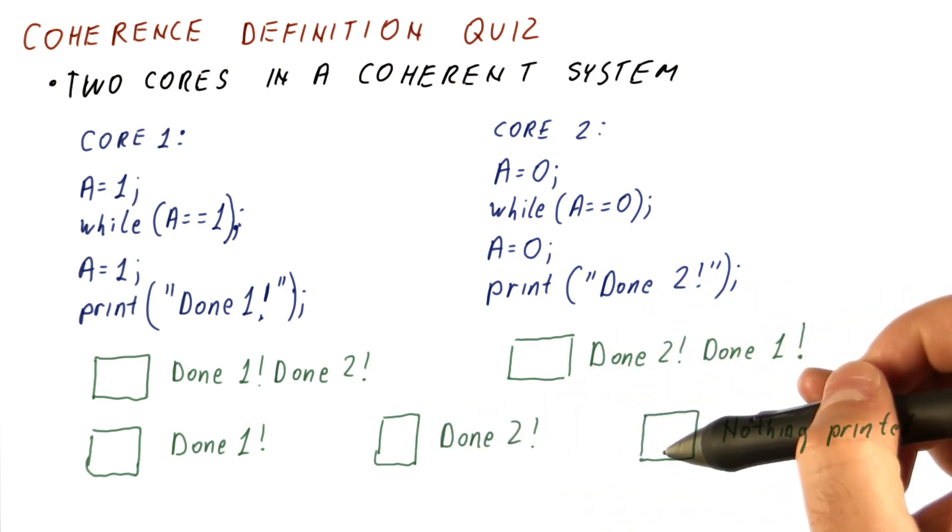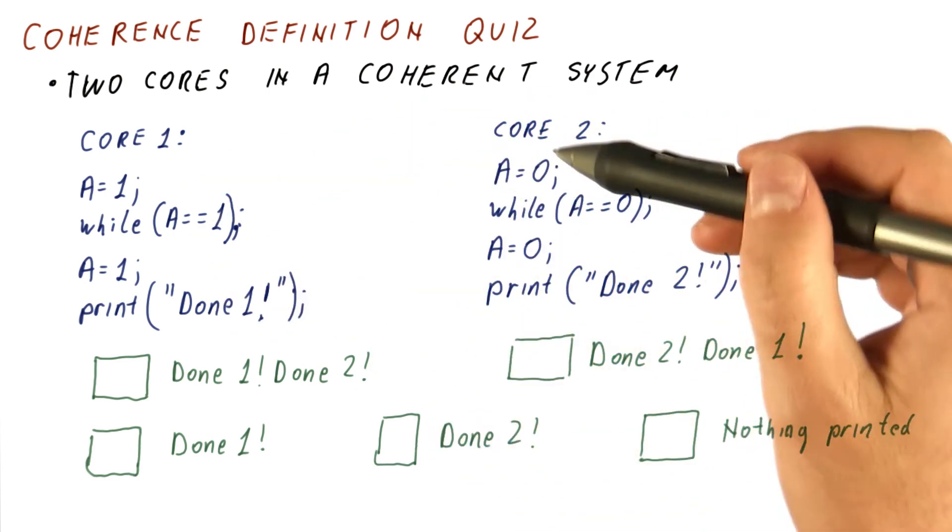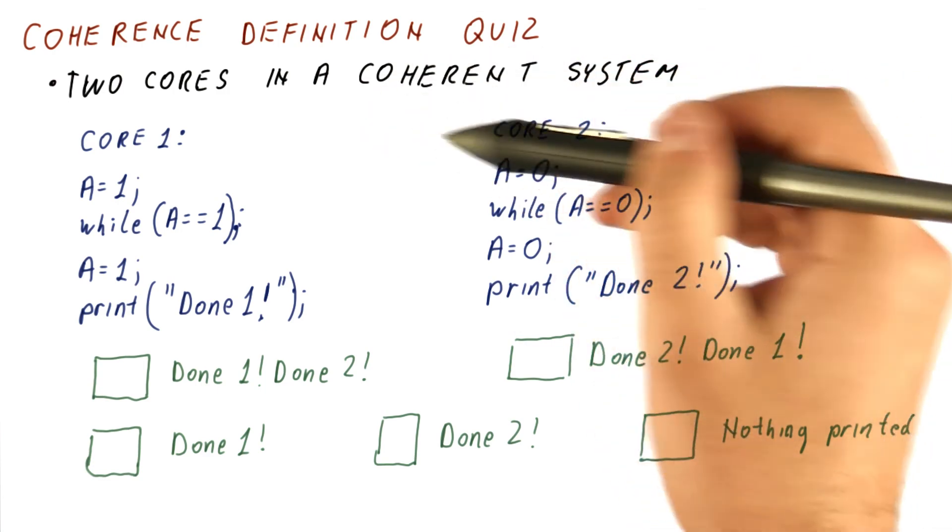So which of these five options are actually possible when these two programs run in a coherent system?